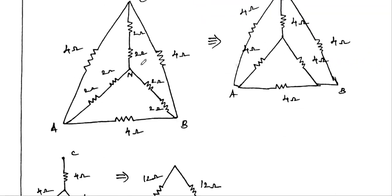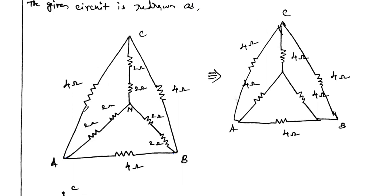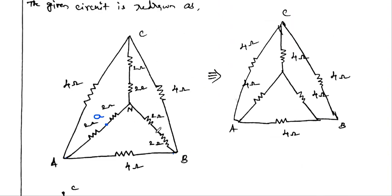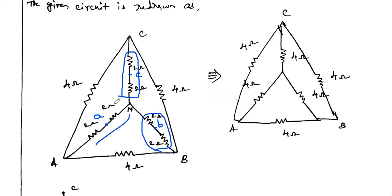Replace the inner delta with the 2 ohm star. Now the total diagram shows the outer 4 ohm delta at A, B, C, and the inner 2 ohm star at small a, b, c with a neutral center node. The 2 ohm star resistors and the 2 ohm connecting resistors are in series: 2 + 2 = 4 ohms on each branch.